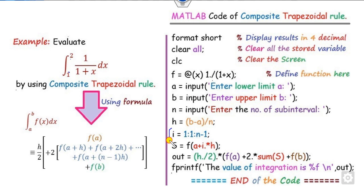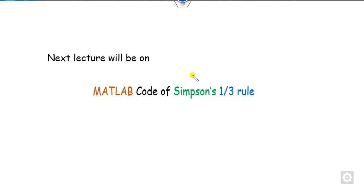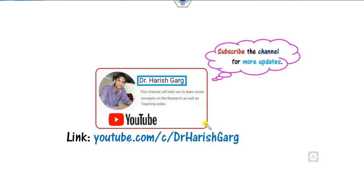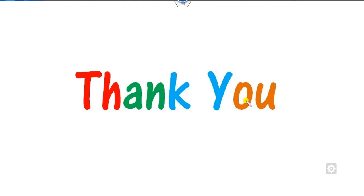This is the generalized MATLAB code for the composite trapezoidal rule. Make sure to change the function definition to match your own function. In our next class, we will see how to define the Simpson one-third rule in a similar two or three lines. Until then, follow the link for more updated videos on numerical methods. Best of luck, students — happy learning!